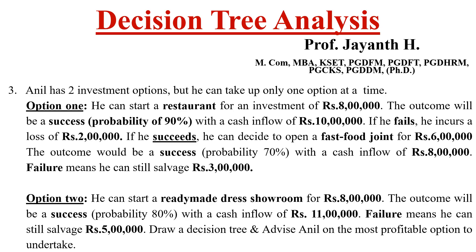The problem states that Anil has two investment options but he can take up only one at a time. Option 1: he can start a restaurant for an investment of 8 lakh — this 8 lakh is the original investment. The outcome will be a success with a probability of 90% with a cash inflow of 10 lakh. If he fails, he incurs a loss of rupees 2 lakh — whenever there is a loss, it is minus 2 lakh, not just 2 lakh.